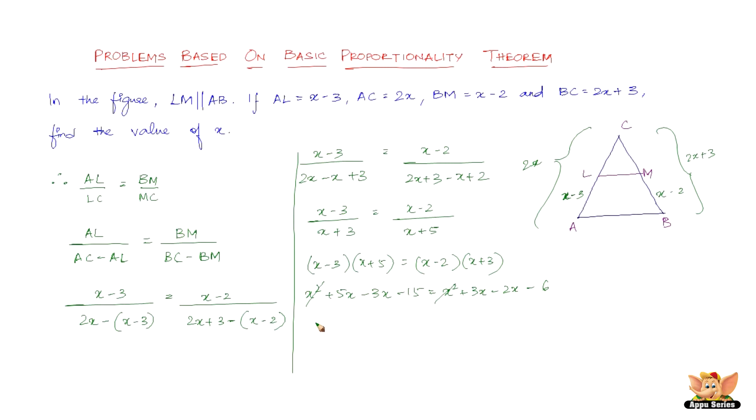x squared cancels out. 5x minus 3x is 2x on the left side. 3x minus 2x is x on the right. So 2x minus x equals 15 minus 6, which gives x equals 9. The value of x is found to be 9.